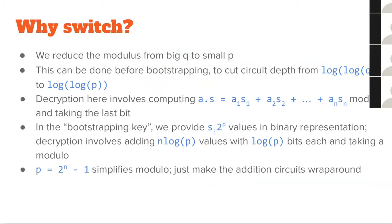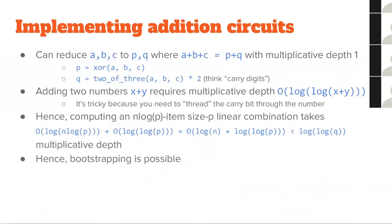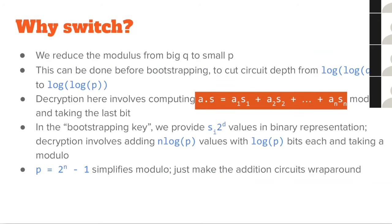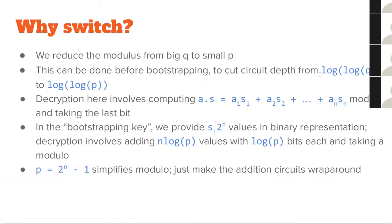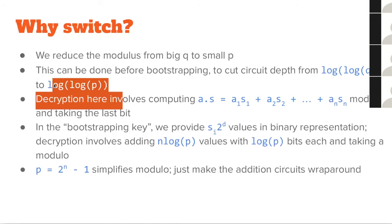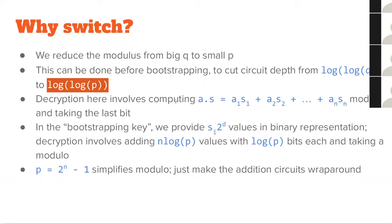There are two reasons to perform the modulus switch. First, it makes bootstrapping practical. Bootstrapping involves computing A · S mod Q, which has circuit depth log(log(Q)). By reducing the modulus, we turn something that requires circuit depth log(log(Q)) into something requiring depth log(log(P)). Since P can be a very small constant after the modulus switch, the circuit depth of bootstrapping becomes a constant — so you can just increase Q as much as needed to make the bootstrapping procedure possible.